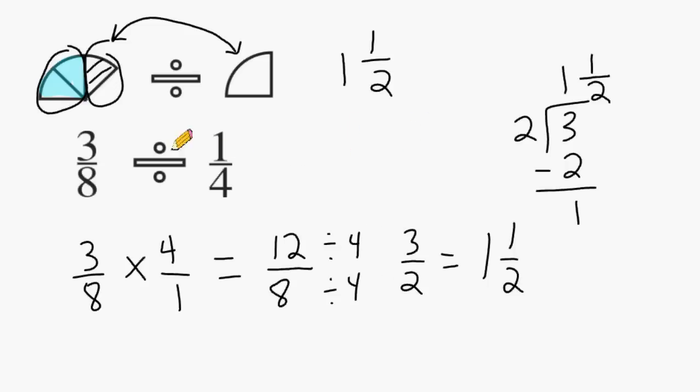So we would say that 3 eighths divided by 1 quarter is 1 and 1 half. Or we could say that 1 quarter can be divided inside 3 eighths one whole time and half of another time.